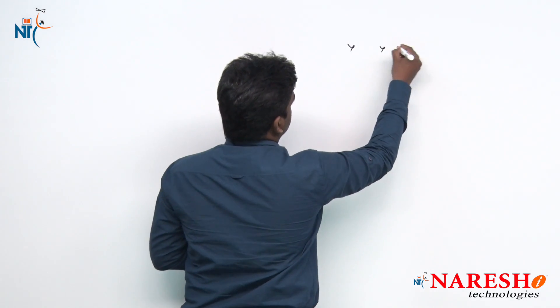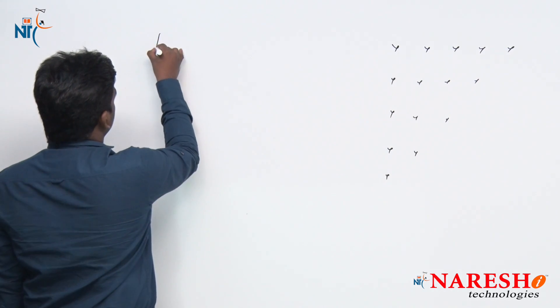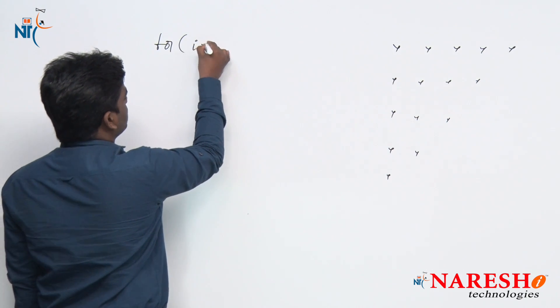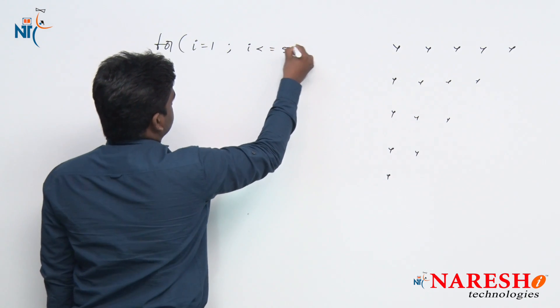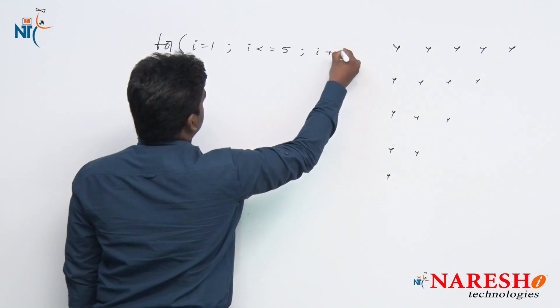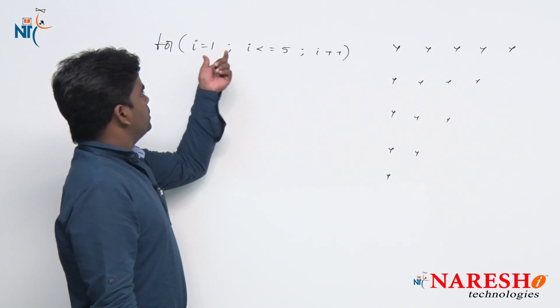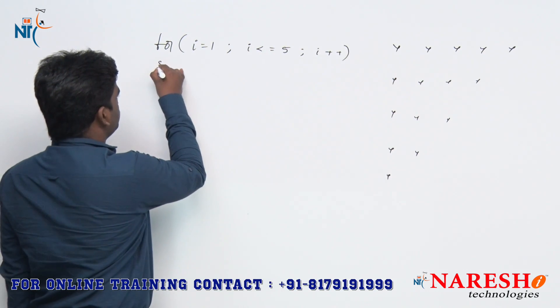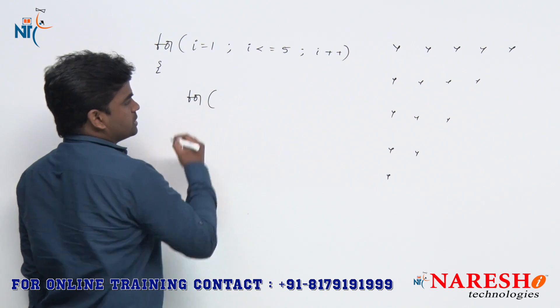So, this is a pattern — how to print this pattern using two loops, but here it is on conditions. In the outer loop we are using an increment operator. So, as we have 5 rows, 5 times the outer loop will repeat. i value starts with 1, so i is less than or equals to 5, i plus plus. And what are the inner loop conditions?